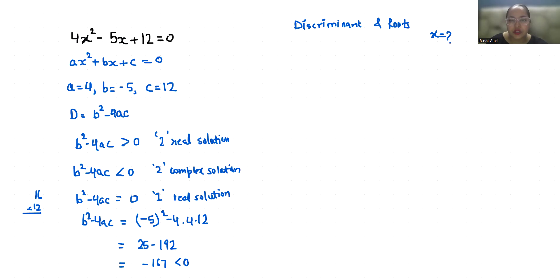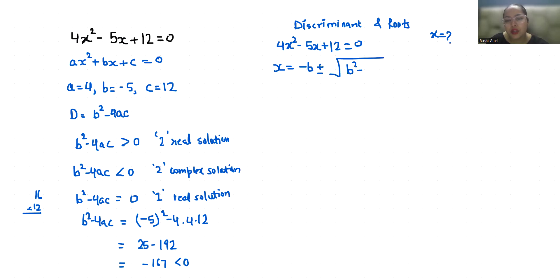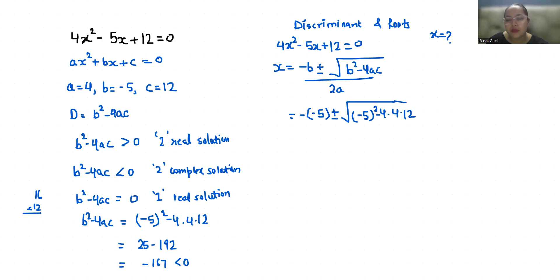Now let's find out these two complex solutions. For 4x² minus 5x plus 12 equals 0, we are going to use the quadratic formula: x equals minus b plus or minus the square root of b² minus 4ac, all divided by 2a. So minus b is minus minus 5, plus or minus the square root of minus 5 squared minus 4 times 4 times 12, divided by 2 times 4.